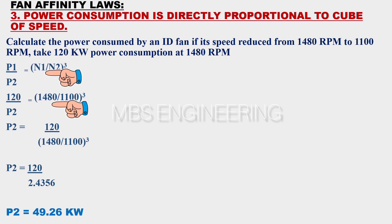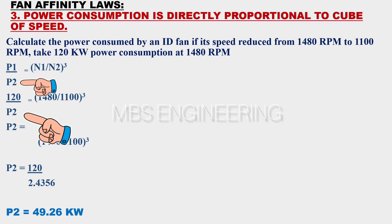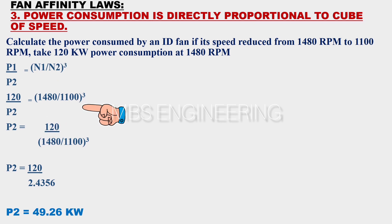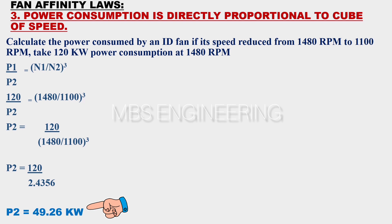Speed N1 is 1480 RPM and speed N2 is 1100 RPM. We need to calculate P2. Then 120 divided by P2 equals the cube of 1480 divided by 1100. Please refer to the below step-by-step calculations. Based on the above equation and given data, the obtained power consumption P2 at a speed of 1100 RPM is equal to 49.26 kilowatts.